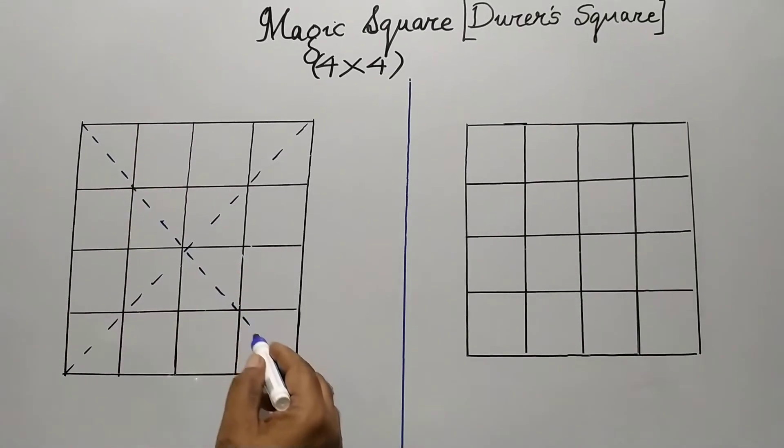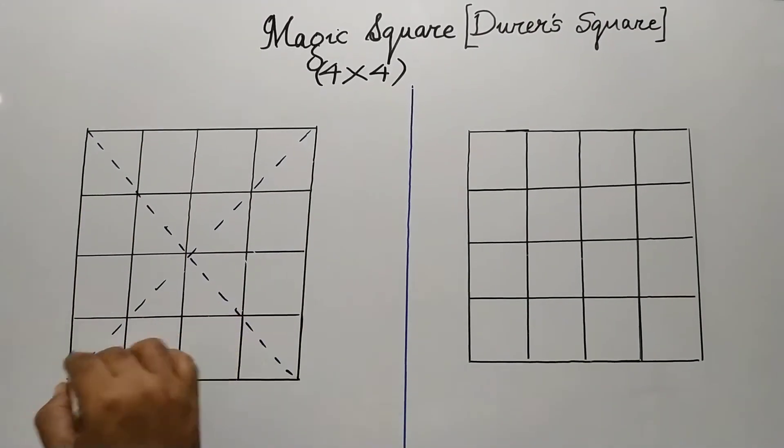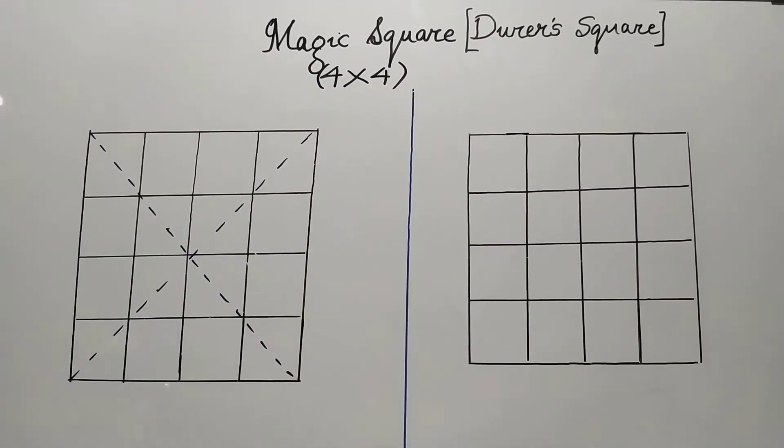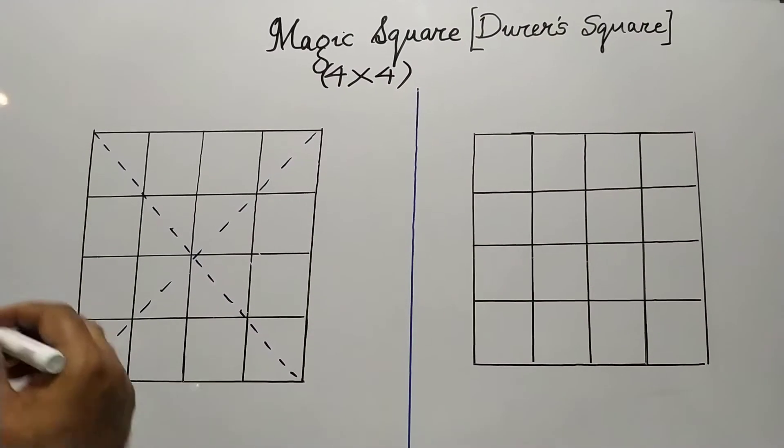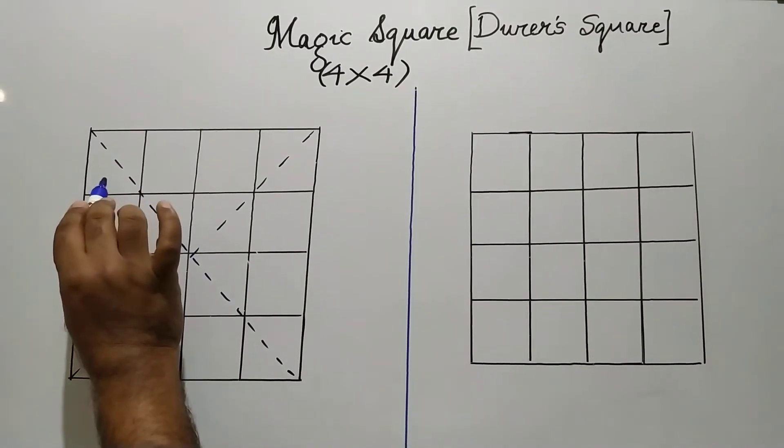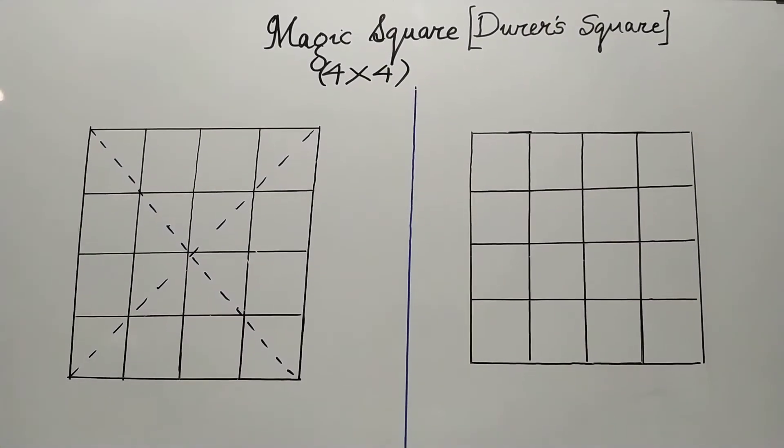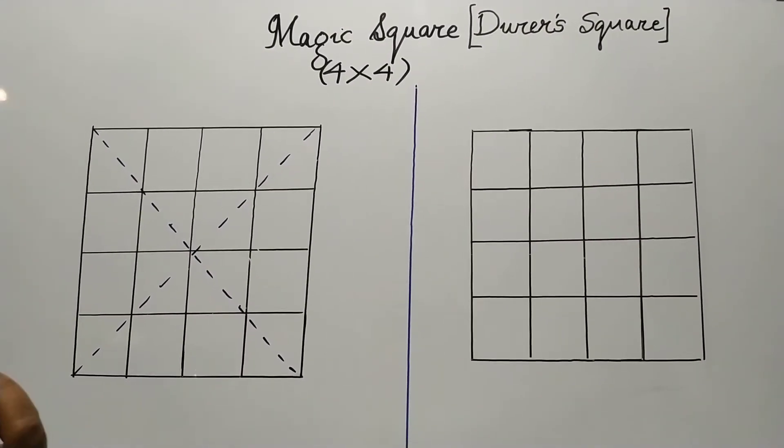But the small grids where the principal diagonal and the secondary diagonal are shown, in those grids, I will just take the count but I will not write the natural number. So shall we start?